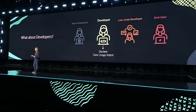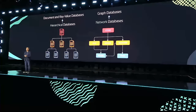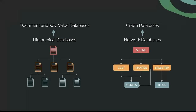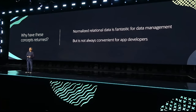What about developers? In the world of development, things are very different. The concepts of apps storing data as a hierarchy and network have been brought back by developers. Document and key-value databases are kind of like hierarchical databases, and graph databases are kind of like network databases. They share some of the same drawbacks. The reason is that normalized relational data, while fantastic from a data management perspective, is not always convenient for app developers.